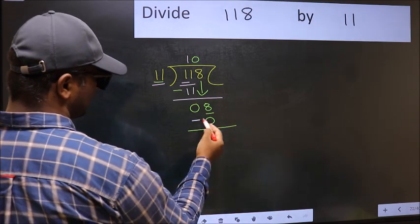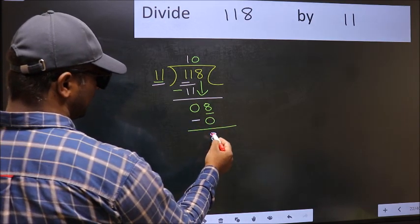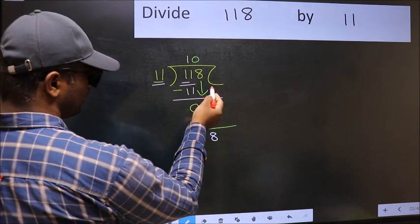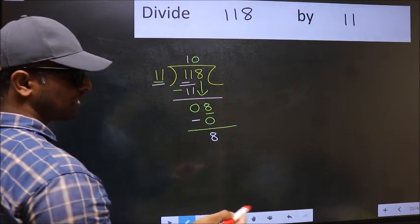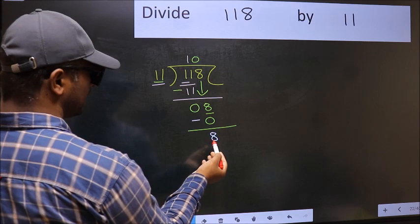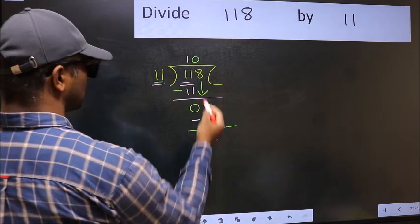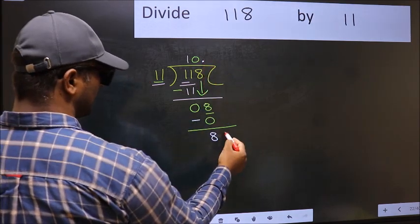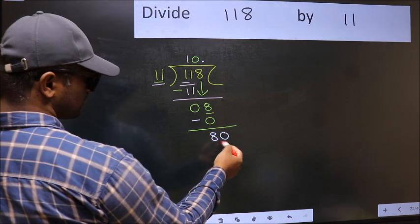Now you should subtract. 8 minus 0 is 8. Over here, we did not bring any number down, and 8 is smaller than 11. So now you can put a dot and take 0. So 80. Our number close to 80 in the 11 table is 11 sevens, 77.